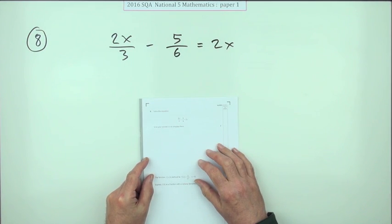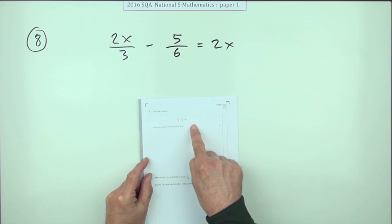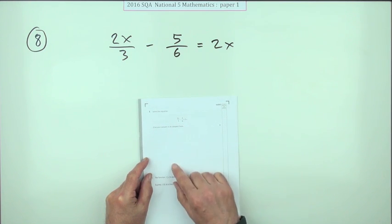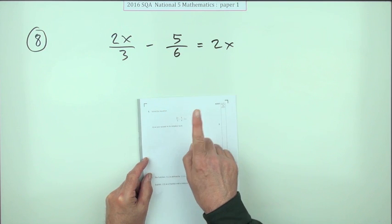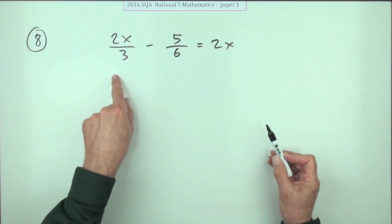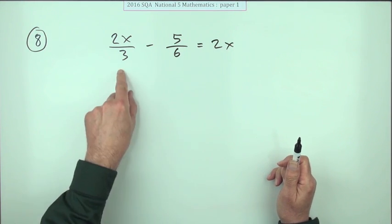Number eight from paper one of the 2016 National Five. Here we have a linear equation for three marks. Give your answer in its simplest form. Well, the only nasty thing about this equation is you've got fractions in it.